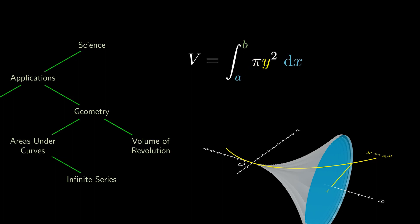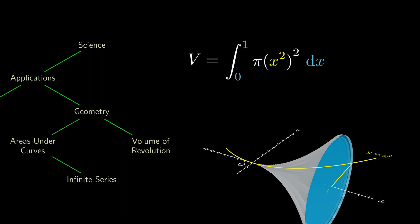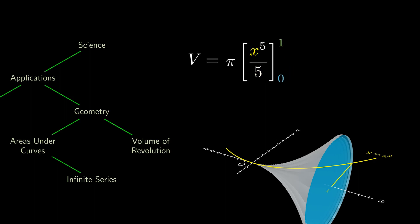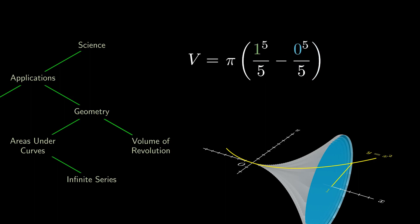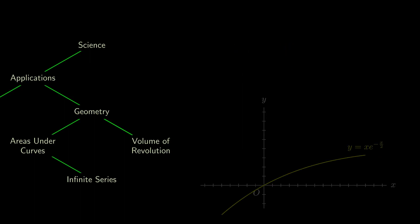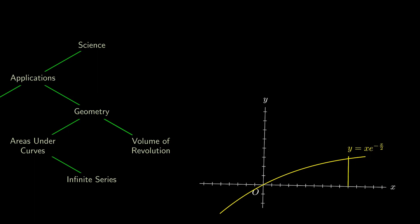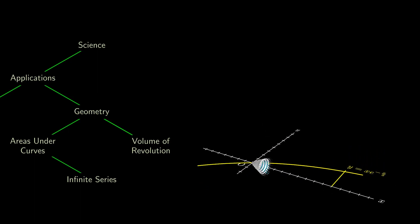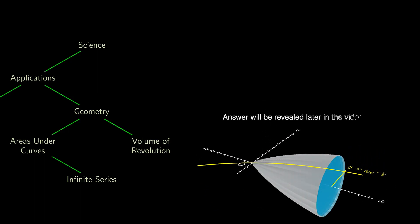In the animation, we are integrating from 0 to 1, and we're using the same function y equals to x squared. Using algebra to simplify, we integrate x to the 4th to get x to the 5th over 5. We plug in the limits and obtain a volume of 1 over 5 pi. Similarly, can you find the volume of revolution of y equals to x times e to the negative x over 2?